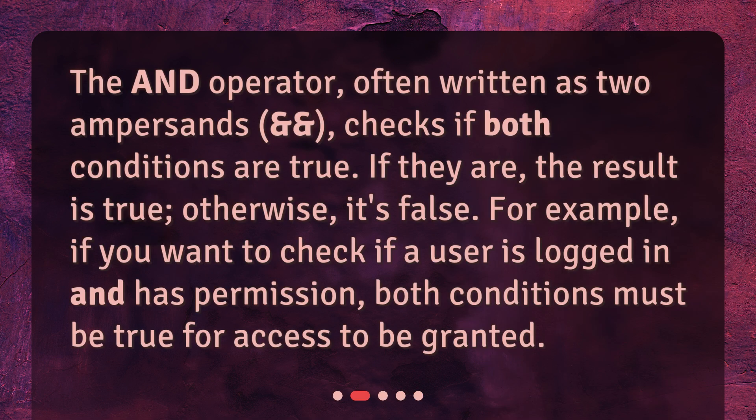The AND operator, often written as two ampersands, checks if both conditions are true. If they are, the result is true. Otherwise, it's false. For example, if you want to check if a user is logged in and has permission, both conditions must be true for access to be granted.